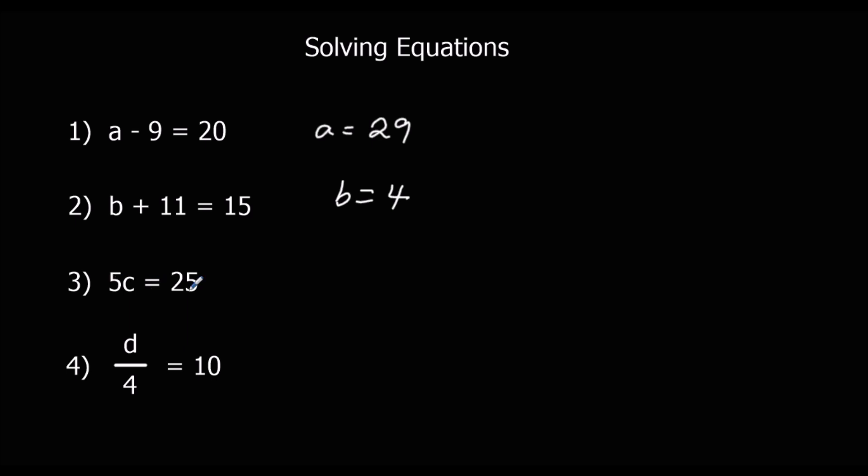5 times c equals 25. c is 5. 5 times 5 is 25. And d divided by 4 equals 10. 40 divided by 4 equals 10.